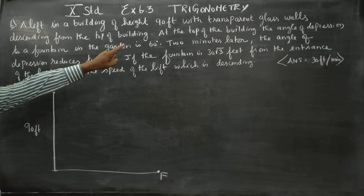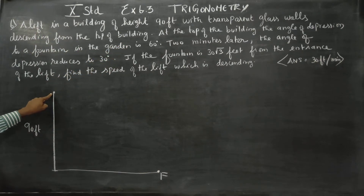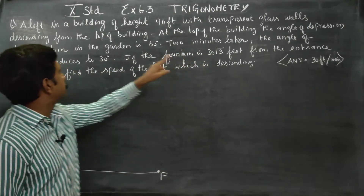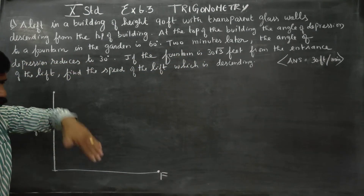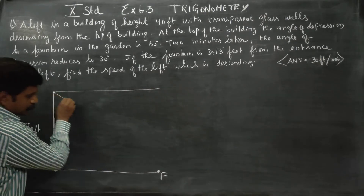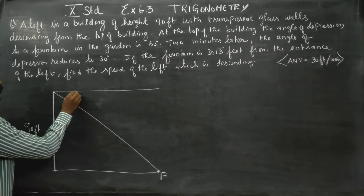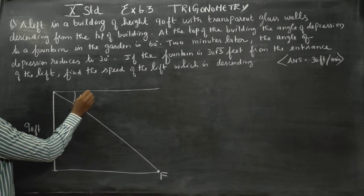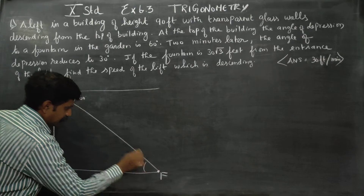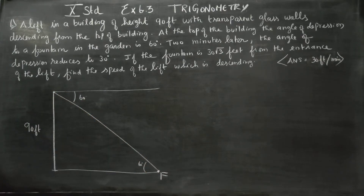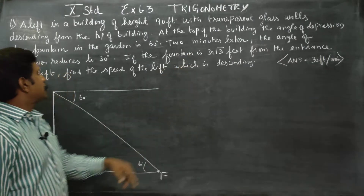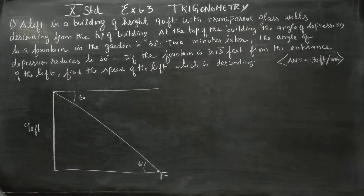At the top of the building, the angle of depression reduces to 30 degrees.